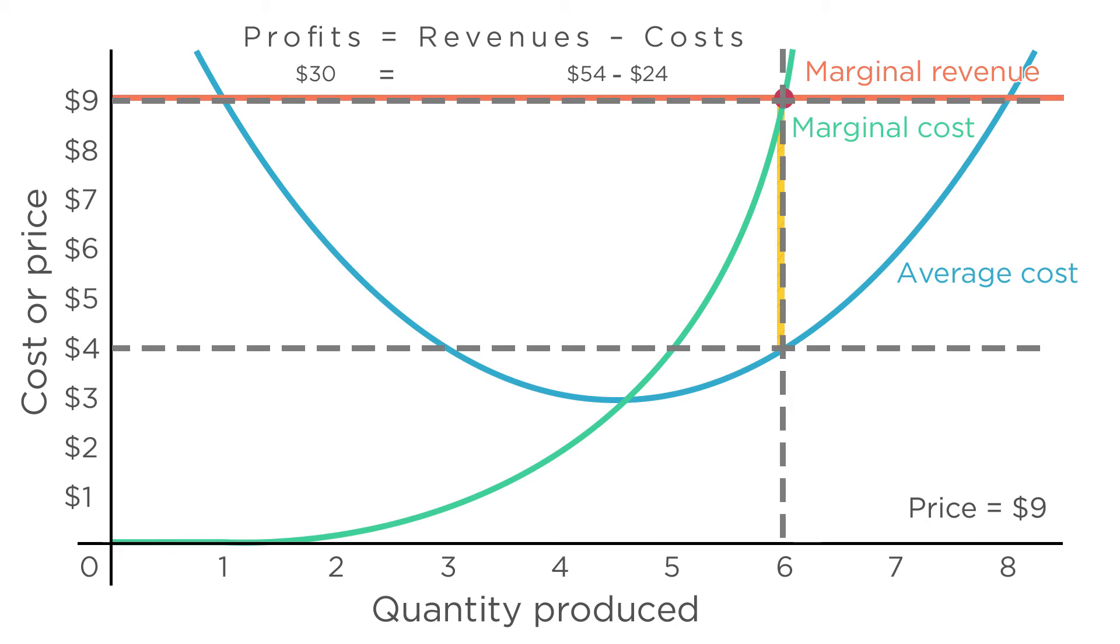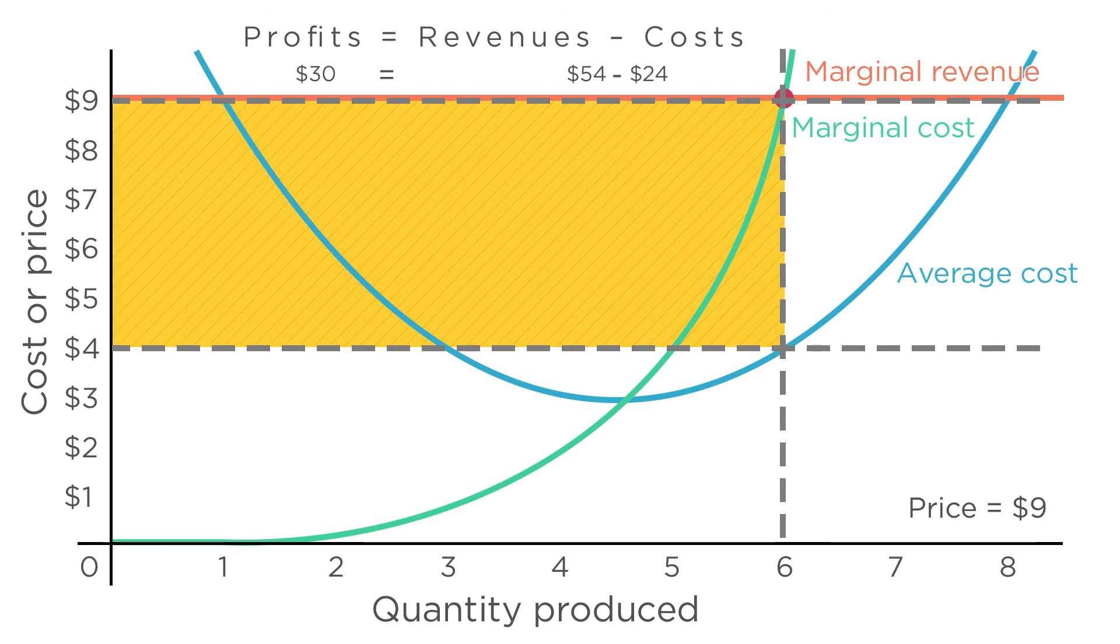So we sweep this line from here to the vertical axis. The size of this rectangle is the quantity sold, six, times the difference between price and average cost, five. Six times five equals $30, the total profit of the firm.